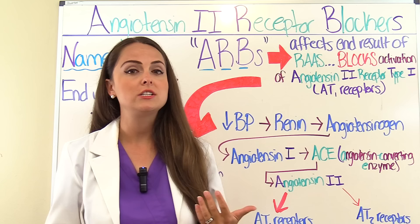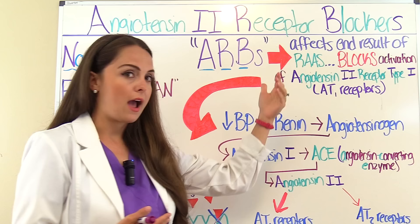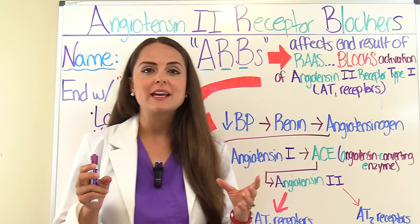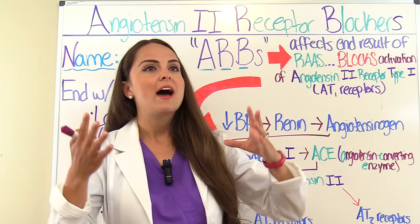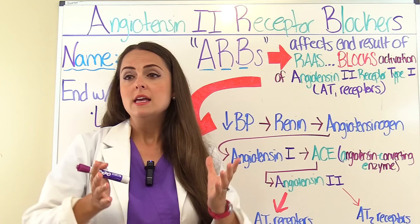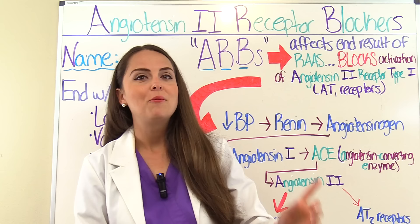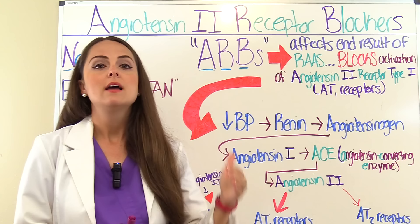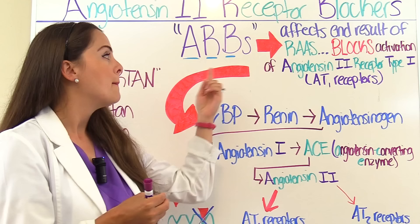ARBs affect the end result of RAS. The whole goal of RAS is to activate angiotensin 2 to get it on board, so we can have vasoconstriction of vessels and help increase blood volume through the release of aldosterone, which increases blood pressure. What an ARB is going to do is block that from happening because the blood pressure needs to be decreased. ARBs block the activation of certain receptor sites that would accept angiotensin 2 once it's activated by the system.